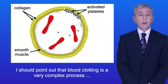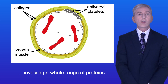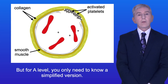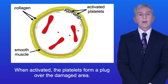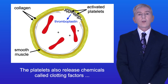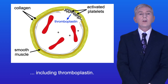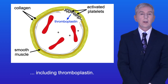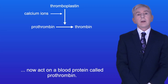Blood clotting is a very complex process involving a whole range of proteins, but for A-level you only need to know a simplified version. When activated, the platelets form a plug over the damaged area. The platelets also release chemicals called clotting factors, including thromboplastin. The thromboplastin together with calcium ions in the blood now act on a blood protein called prothrombin.